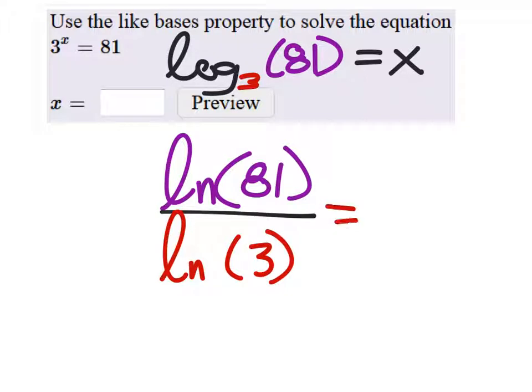So natural log of 81 over natural log of 3, and that would give us the answer, which is 4. Yeah, very good.